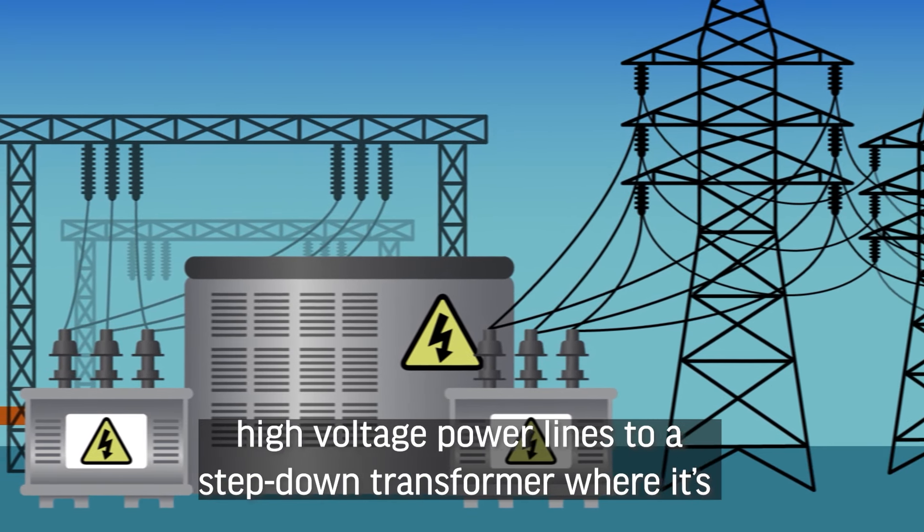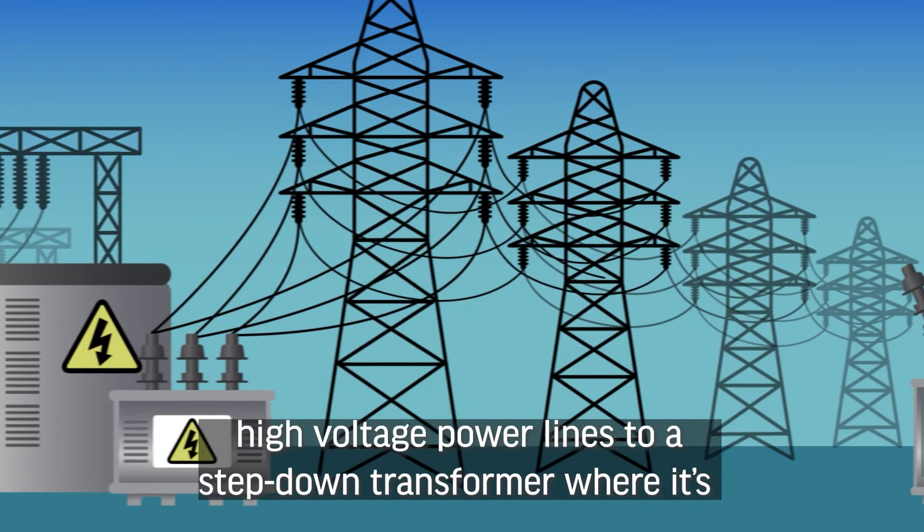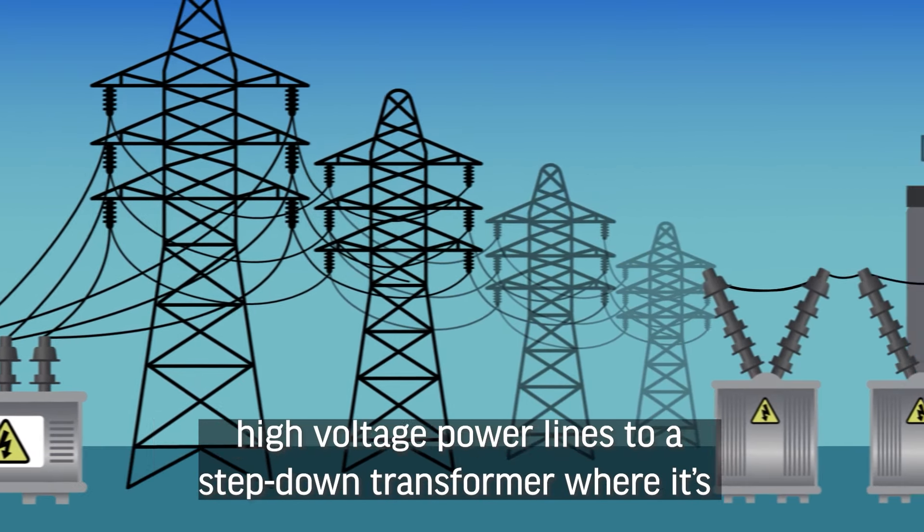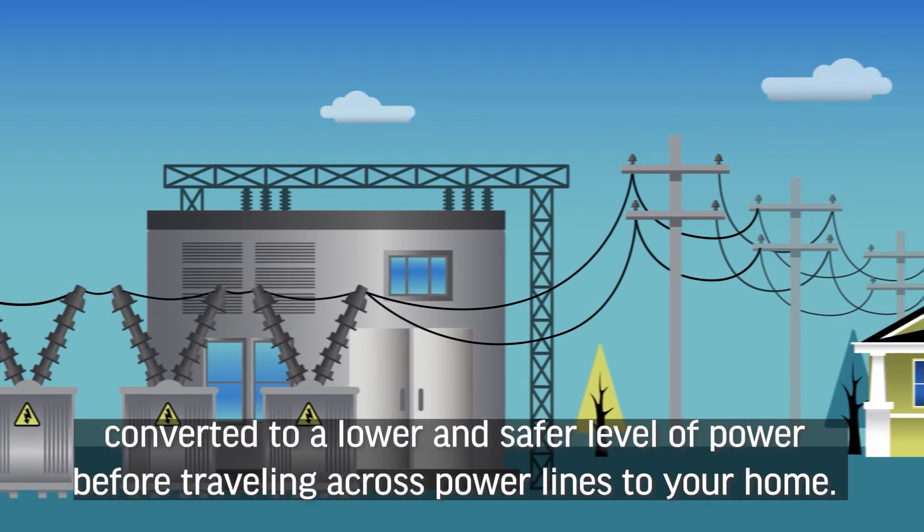This energy travels across high-voltage power lines to a step-down transformer, where it's converted to a lower and safer level of power before traveling across power lines to your home.